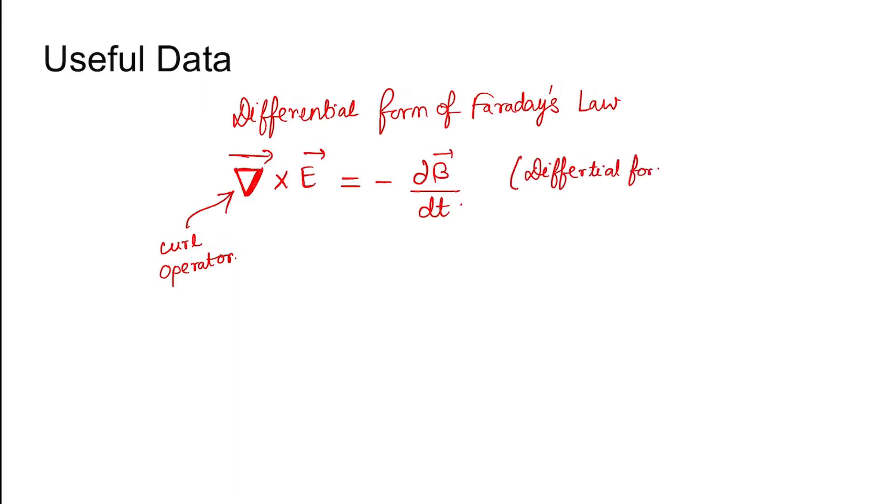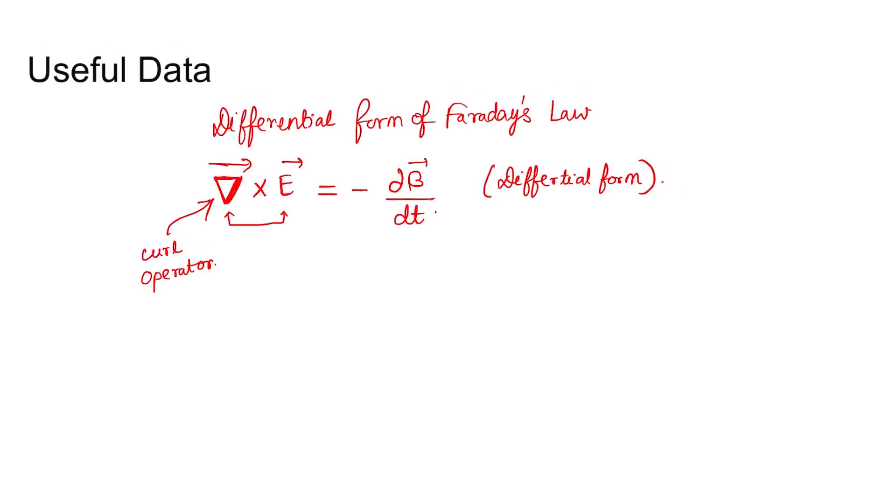You will understand that better if you write it in integral form. So, line integral of E dot dl equals minus d/dt of integral B dot ds. As you can understand, this is the potential, the EMF produced, which is nothing but the rate of change of magnetic flux with respect to time.